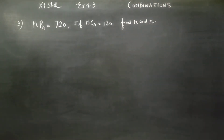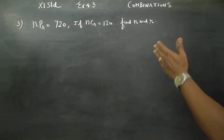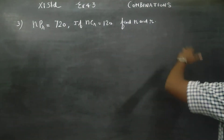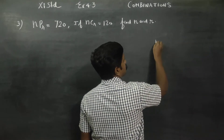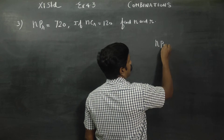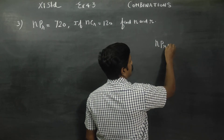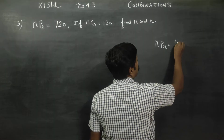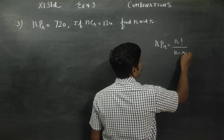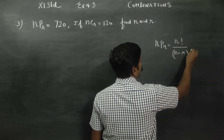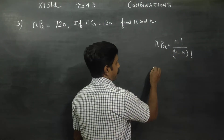Hello 11th standard students. In exercise number 4.3, sum number 3, we are given NPR and NCR values and we need to find N and R. Before entering into the sum, I must recall this formula. NPR is N factorial by N minus R factorial — this is the NPR formula.